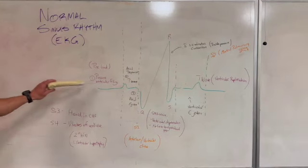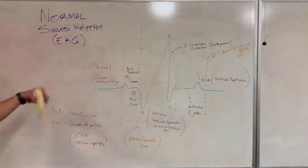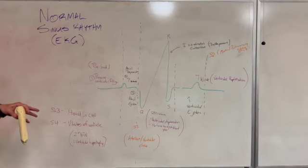So the first part is preload. This is where blood is coming into the ventricles. As you can see there's passive ventricular filling. So basically that's just blood filling the ventricles.